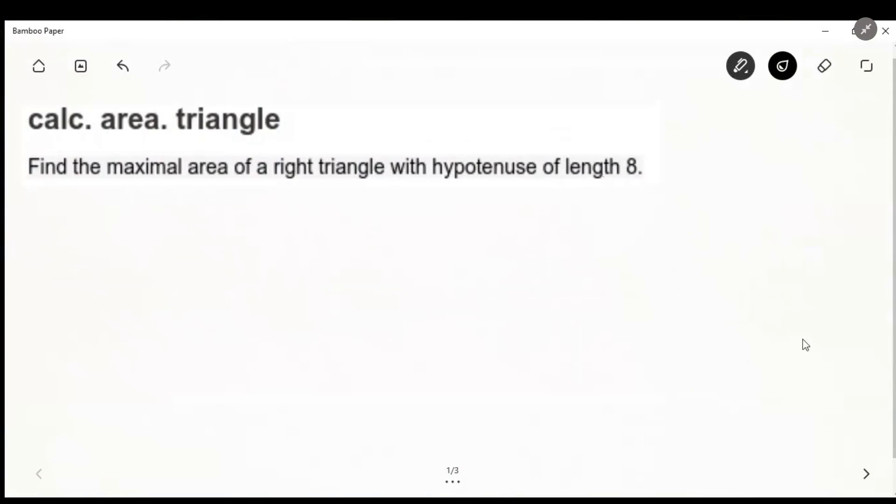Okay, so let's take a look at the problem we have here. It's asking us to find the maximal area of a right triangle, and the hypotenuse is 8.